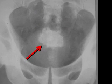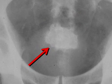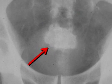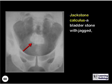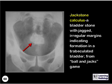Finally, what is the name of this appearance? This is a jackstone calculus, a bladder stone with jagged irregular margins indicating its formation in a trabeculated bladder. It comes from the ball and jacks game.